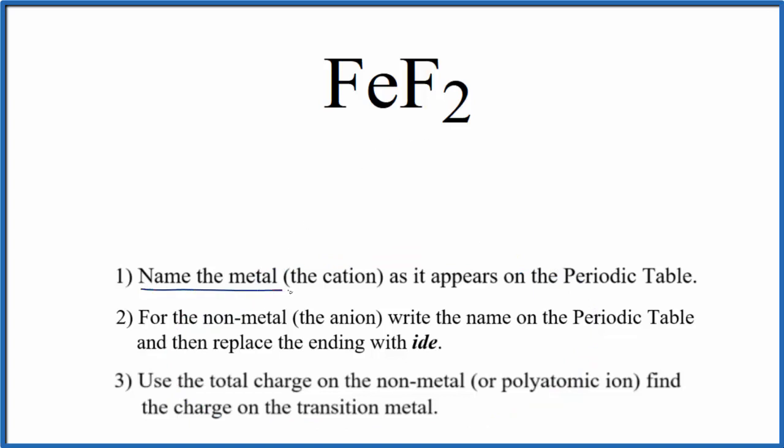First we'll write the name for the metal as it appears on the periodic table. So Fe, that's iron. Next, we'll write the name for the non-metal as it appears on the periodic table. So F, that's fluorine, and we're going to replace this ending here, this I-N-E, with I-D-E.